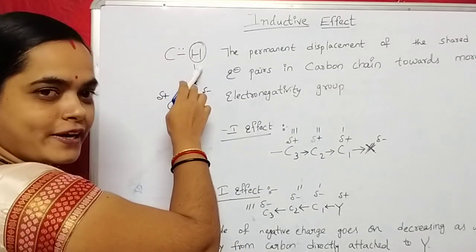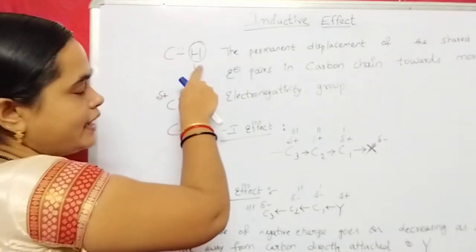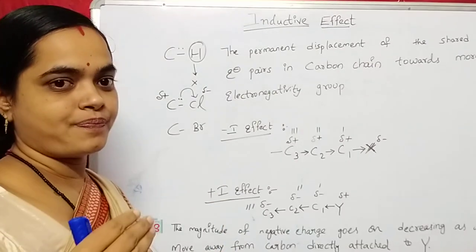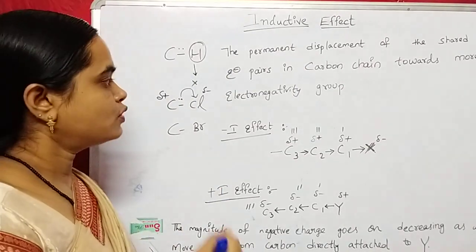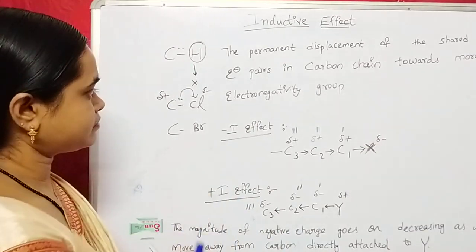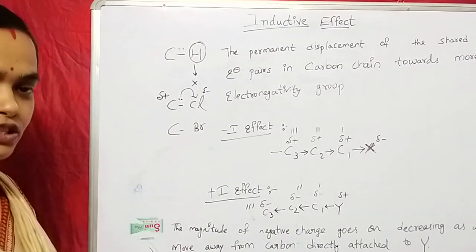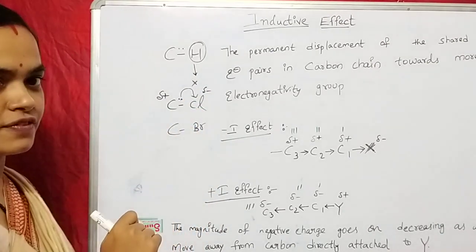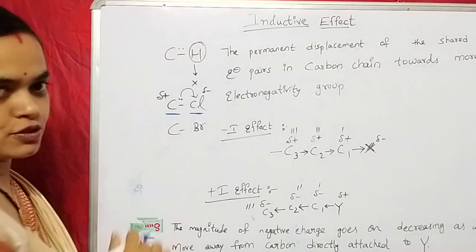When carbon is bonded with hydrogen, the shared pair of electrons are symmetrically arranged between carbon and hydrogen. But if the hydrogen is replaced by electronegative atoms — electronegative atoms means they attract the shared pair of electrons towards themselves. Those are electronegative atoms like halogens: chlorine, bromine, etc. If carbon is replaced by some halogens, the halogen or electronegative atom attracts the shared pair of electrons towards itself. So, it gets a partial negative charge while the carbon gets a partial positive charge.